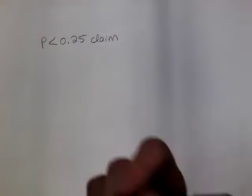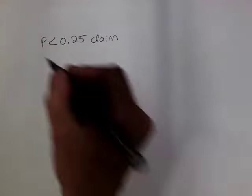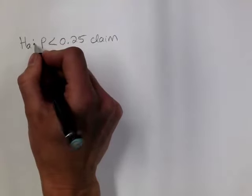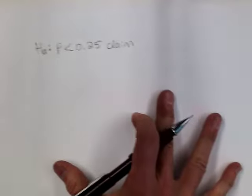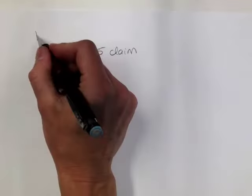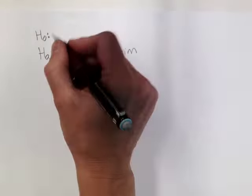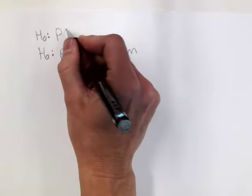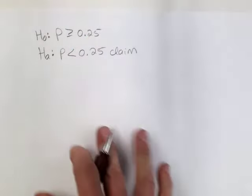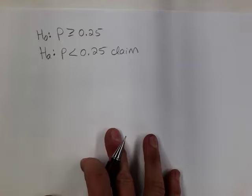Is this the null or the alternative? This is the alternative. So this makes the null P greater than or equal to .25. This is going to be a lower tail test.